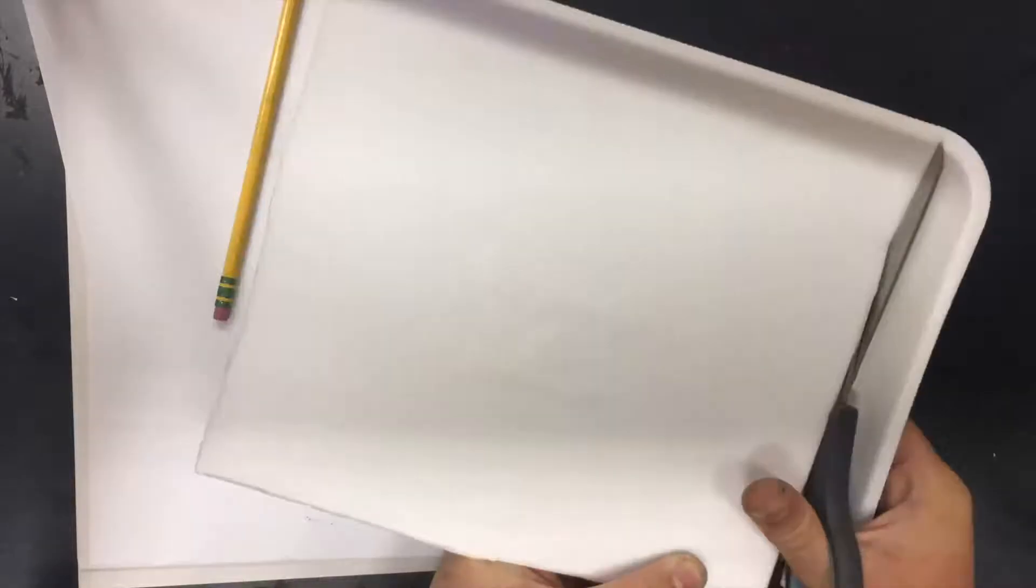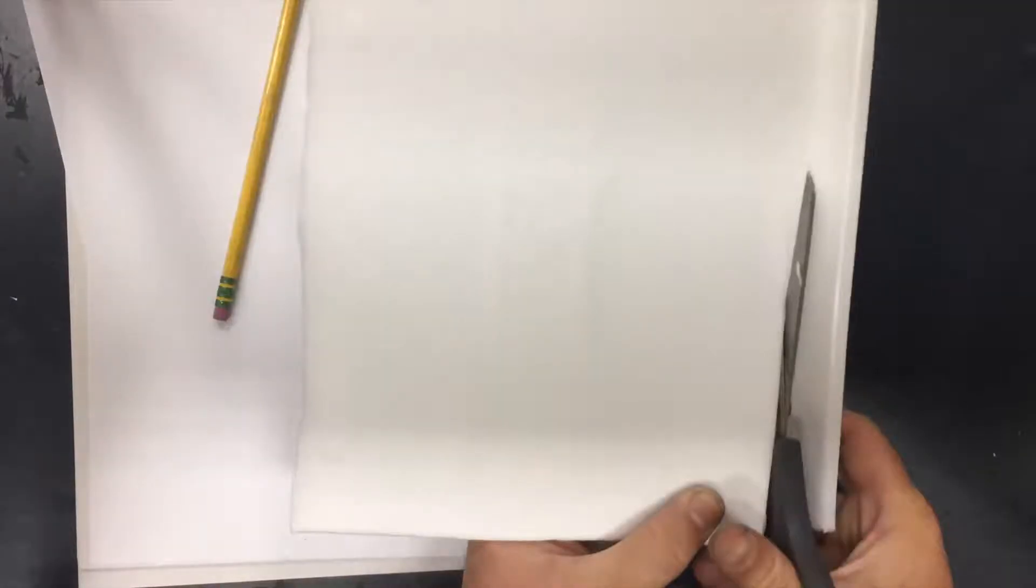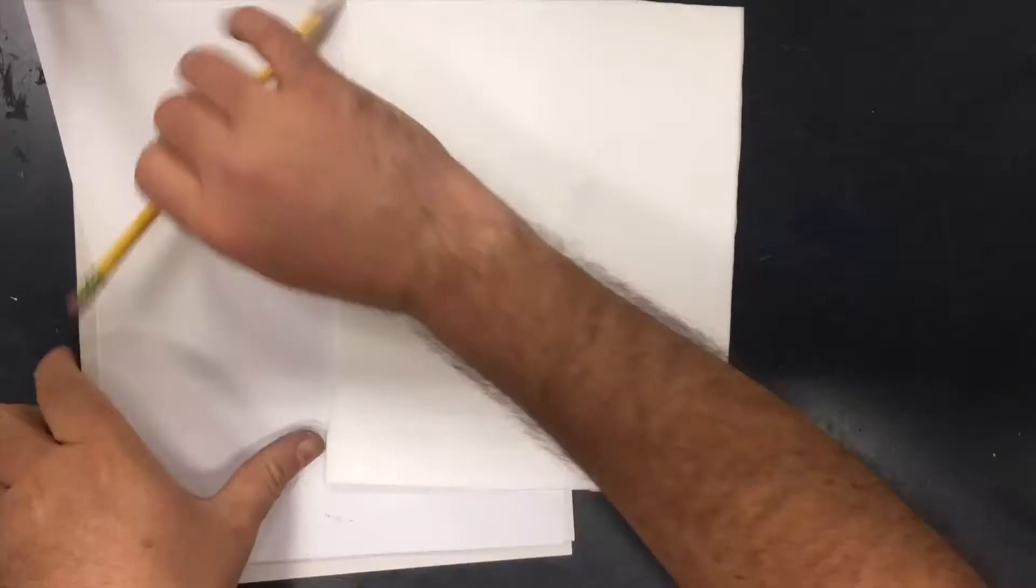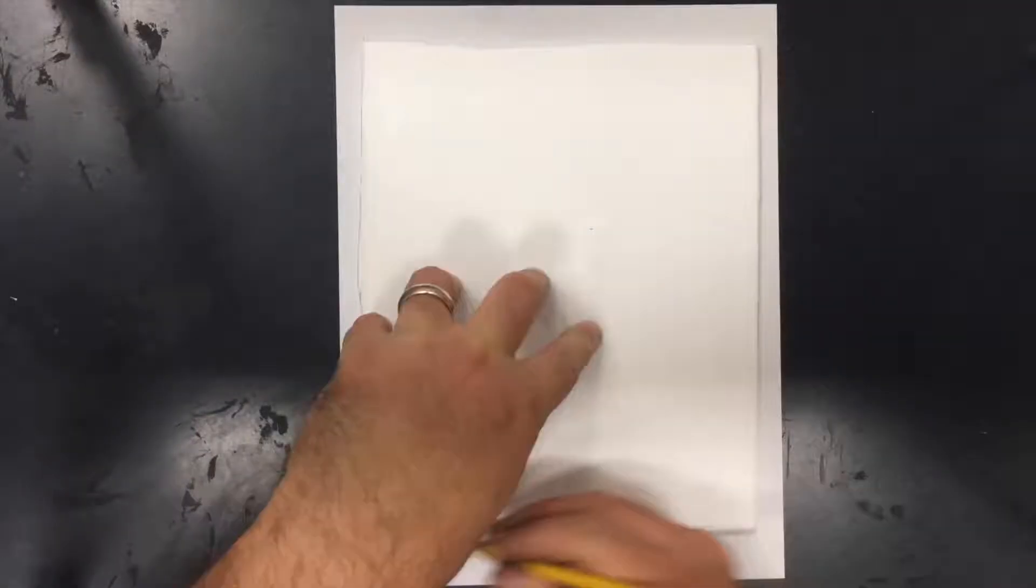We're gonna do our prints with styrofoam. Start by trimming off any curved parts of your styrofoam to make sure you have a nice flat surface for printing.